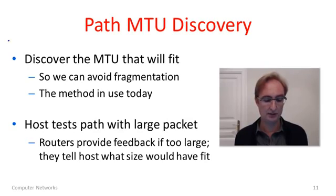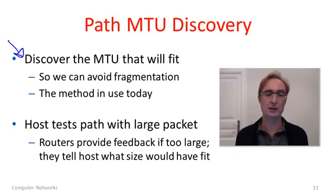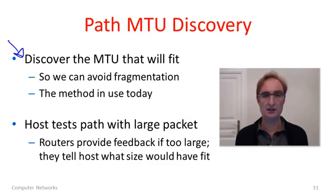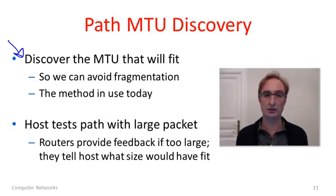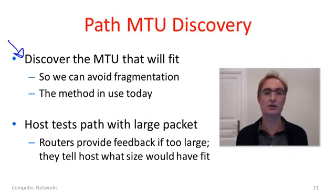Let's move on to the alternate method used instead these days: path MTU discovery. Here we're trying to discover the largest MTU which will fit through the network. The host essentially tries to send data and as a side effect tests the network. It sends a large packet; if it doesn't fit, routers send feedback to the host telling it what size packet would have fit. That way the host can discover how large a packet it can send through the network.